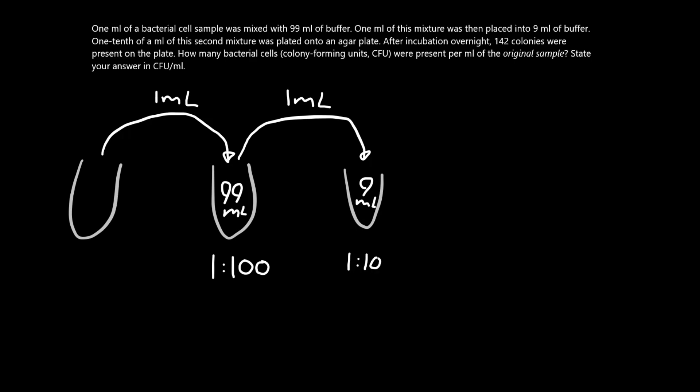And once those dilutions are done, we're going to spread 0.1 mil onto an agar plate, and then we're going to watch the colonies grow. So 142 colonies grow, and this means that we can calculate our colony forming units by just dividing 142 by 0.1 mil. And that makes 1,420 colony forming units per milliliter.